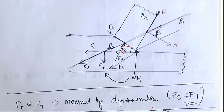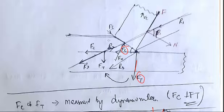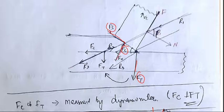This is our Fc, and we call the Fc perpendicular — that is Ft. And if this is our Fs in this direction, then the perpendicular to that is Fn.